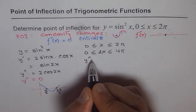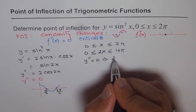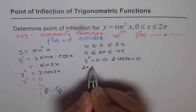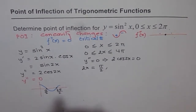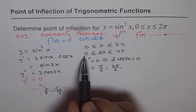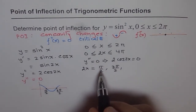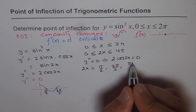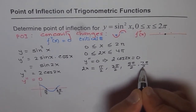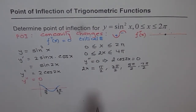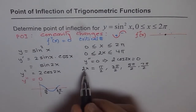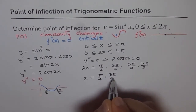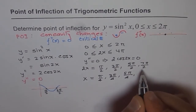Setting y'' = 0 implies 2 cos 2x = 0. This is satisfied when 2x equals π/2 and 3π/2. Since 2x ranges from 0 to 4π, we add 2π to get one more cycle: 2x also equals 5π/2 and 7π/2. These are the four possible solutions. Dividing each by 2, we get x equals π/4, 3π/4, 5π/4, and 7π/4 as the possible points of inflection.